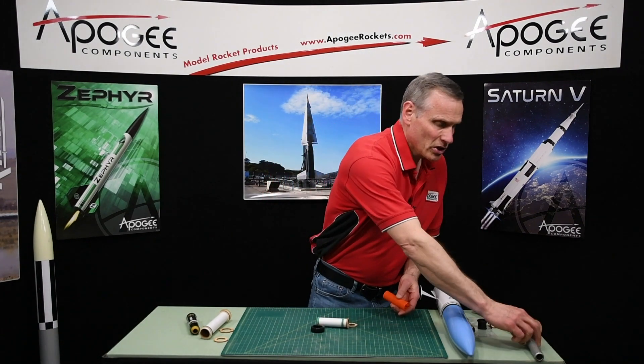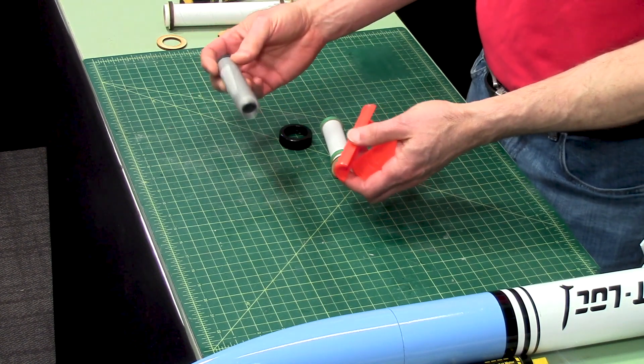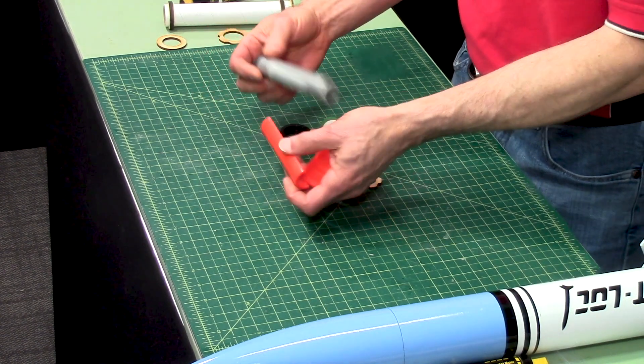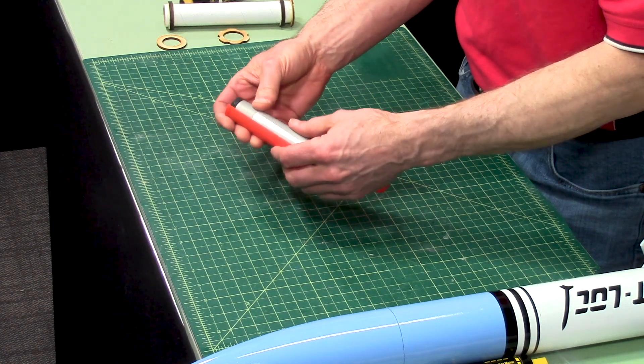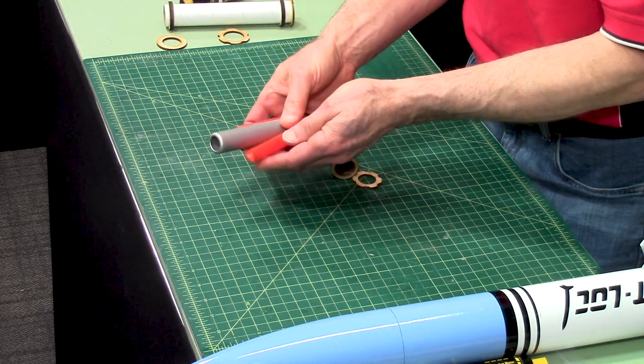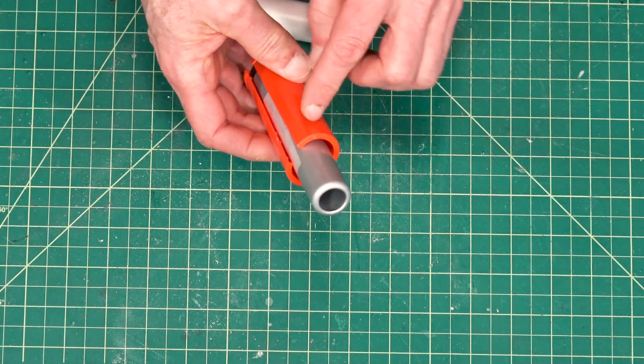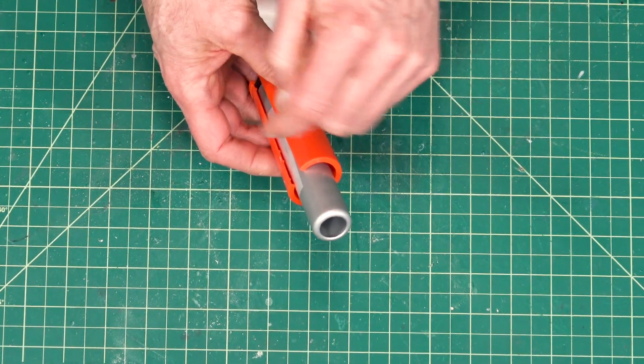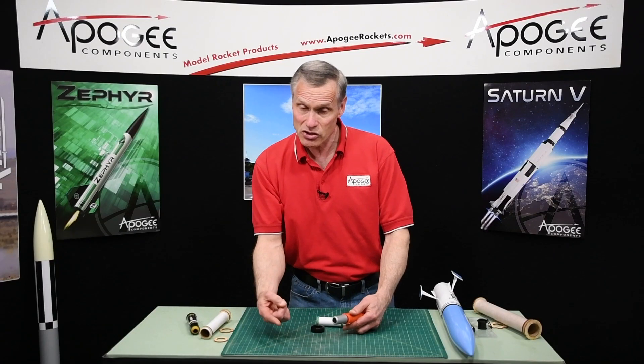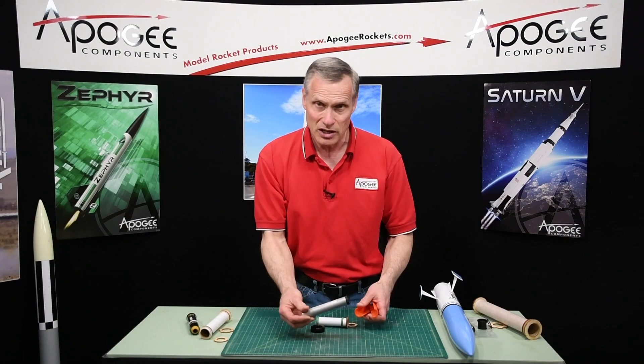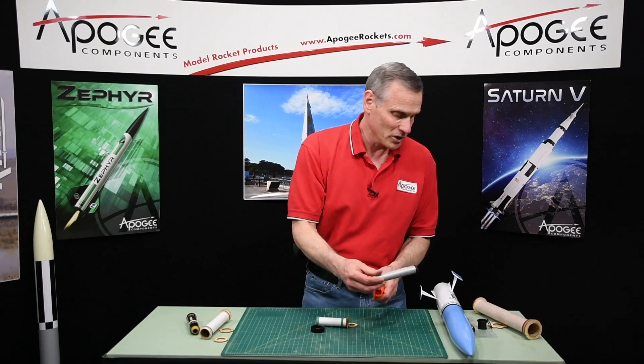For example, here is a Cessaroni three grain 24 millimeter casing. I can put it in and it feels like it fits, but it doesn't quite, and it won't wrap around it because of the diameter here at the end. There's a six grain casing that's almost twice as long as this that's definitely not going to fit in there.